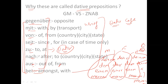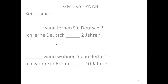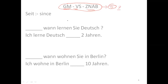So whenever you use any of these prepositions, the word coming after them must be in the dative case. That is why these are known as dative prepositions. The abbreviation 'GM vs Janab' covers all the prepositions that fall under this category. I'm starting with S — seit.